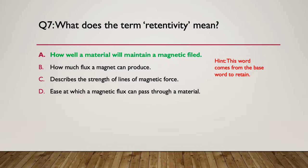The answer is A — how well a material will maintain a magnetic field is how retentive it is; how likely the field is to stay in the material. How much flux a magnet can produce is not the answer. The strength of the lines of magnetic force relates to it but doesn't define retentivity. And the ease at which magnetic flux passes through a material is another characteristic, not retentivity. So the answer is how well a material will maintain a magnetic field within it.